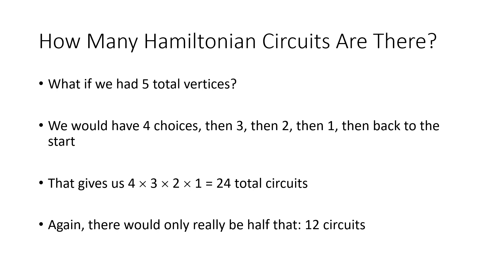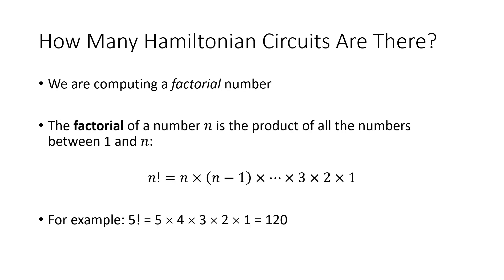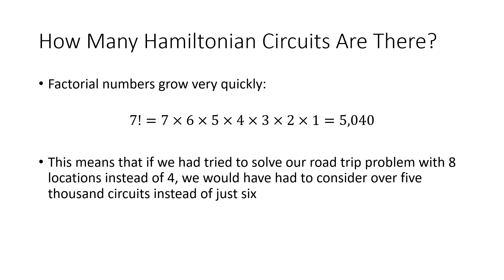That might not seem so bad at first. What we're computing is called a factorial. Five factorial is five times four times three times two times one. Factorial numbers grow very quickly — seven factorial is a little over 5,000. So if we had eight possible locations instead of four, we wouldn't just double the circuits. We'd go from six circuits to over 5,000 circuits to guarantee we have the best possible answer. This brute force method gets pretty difficult pretty quickly.